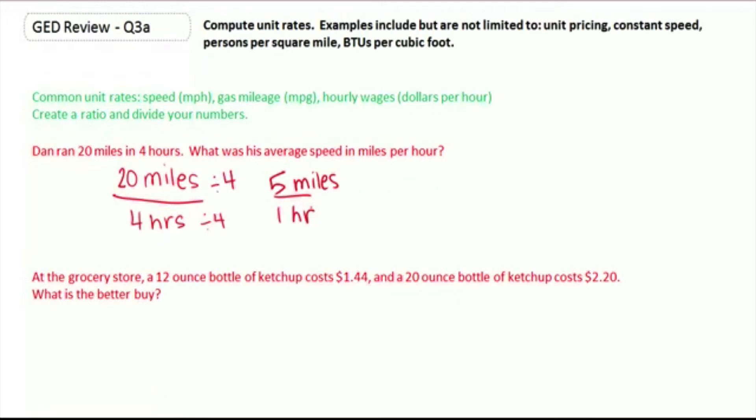For the better buy, you're always going to take the price that was paid and divide it by whatever units you're talking about. In this case, we're talking about ounces. So our first ratio is $1.44 for 12 ounces, and our other one would be $2.20 over 20 ounces.